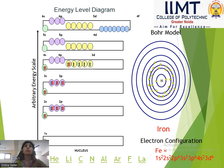The remaining electrons of iron go into the third shell. The 4s² electrons — that is, 2 electrons — enter into the fourth energy level. So the distribution is 2, 8, 14 in the inner shells, and 2 in the last section.